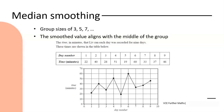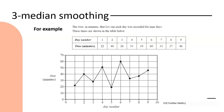The example I'm going to use for the next couple of slides is from a past exam where we have the time in minutes that Liv ran each day, recorded for nine days. We have a table showing those times and the graph itself. Firstly let's look at three-median smoothing.